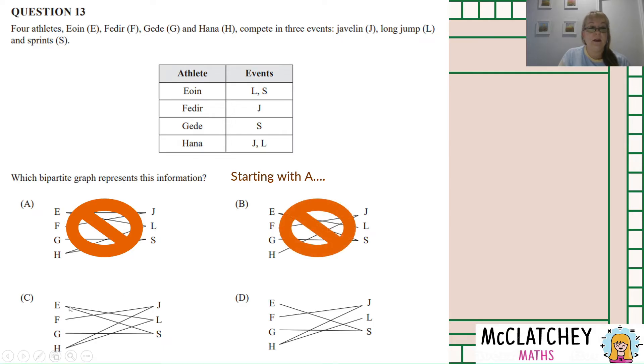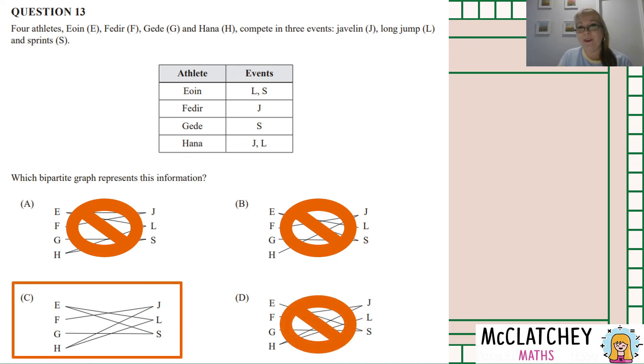Let's look at C. Once again Yuen goes to L and S. Yes, looking promising. Fadiya go to J only. Correct. Ghida to S only. Correct. And Hannah to J and L. Correct. C looks like a good option. Let's just double check D in case we've missed something. Yuen should be going to L and S. No, they're just going to S. We can rule out D and that means C is our only possible answer.